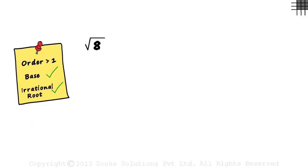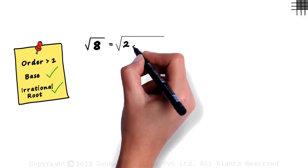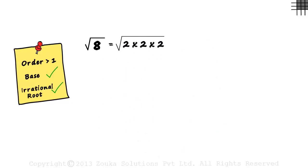Let's reduce the base to its prime factors. It will equal root of two times two times two. Since we are calculating the square root, we can take a pair of same numbers and take one number out from the pair.